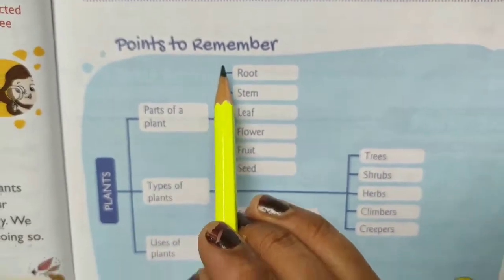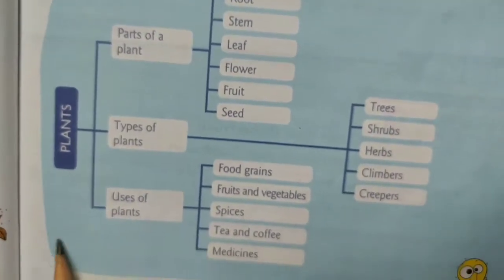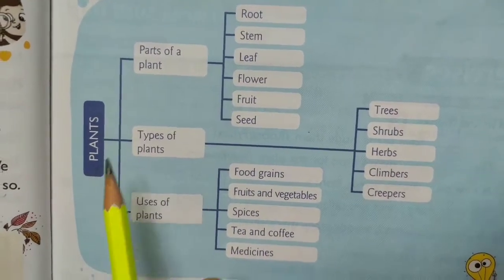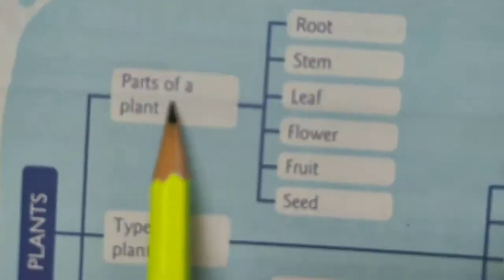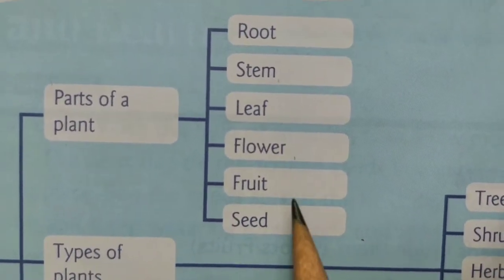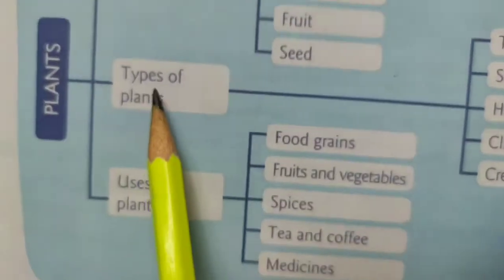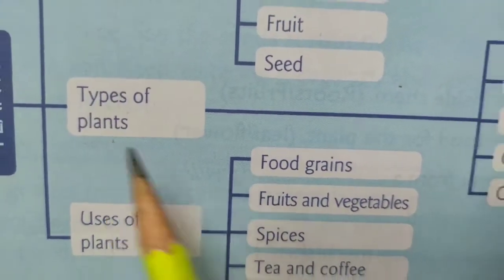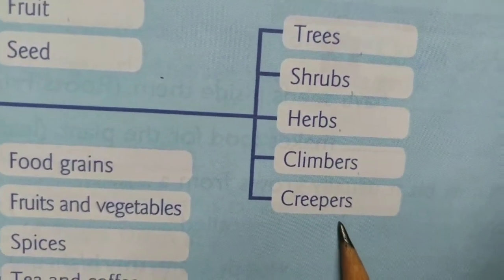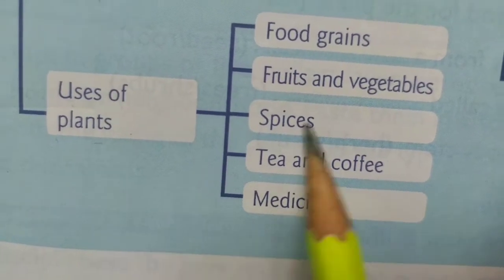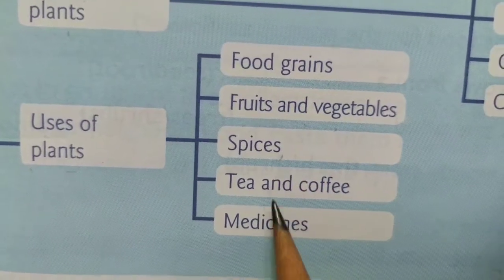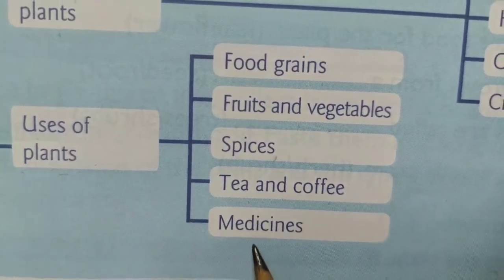Points to remember. This is the flow chart of plants. Parts of a plant: root, stem, leaf, flower, fruit and seed. Types of plants: trees, shrubs, herbs, climbers and creepers. Uses of plants: food grains, fruits and vegetables, spices, tea and coffee, and medicines.